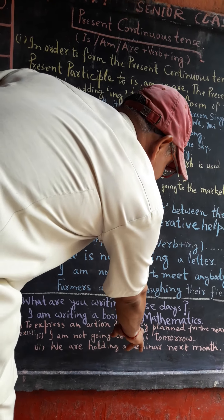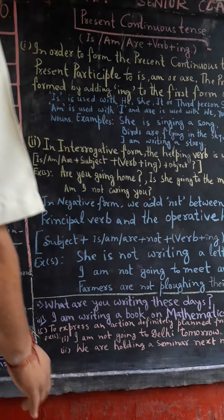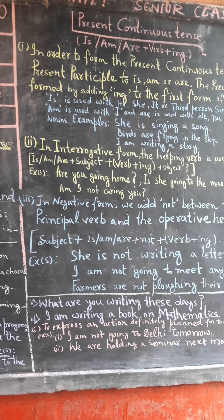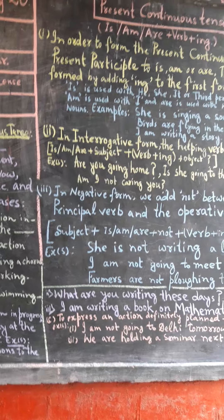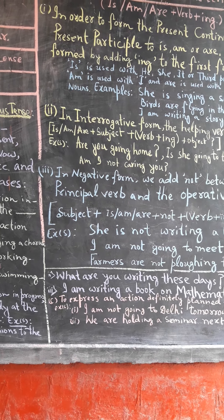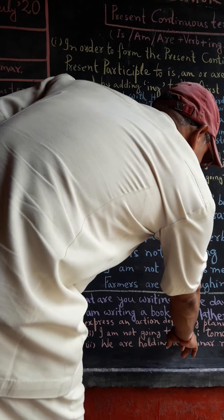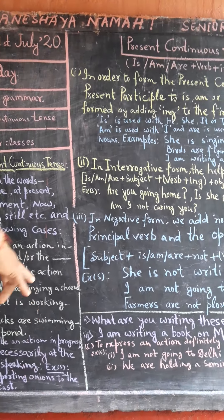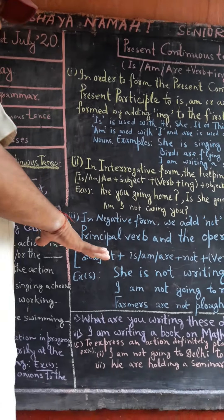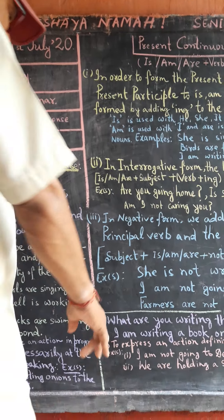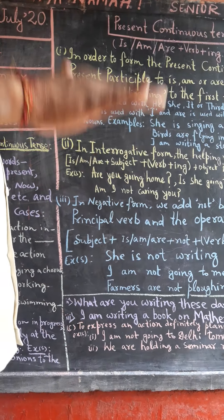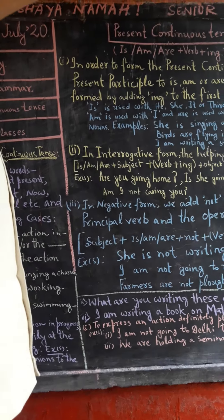Present continuous is also used to express an action definitely planned for the near future. For example: 'I am not going to Delhi tomorrow', 'We are holding a seminar next month.'